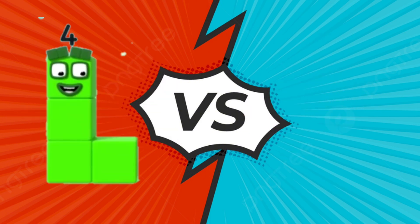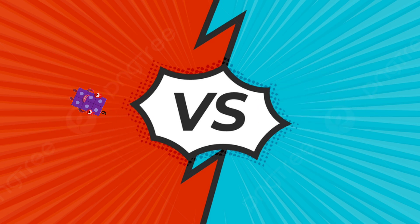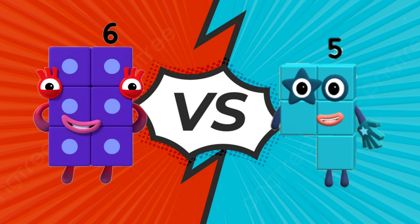Number block 4 likes hot. Number block 3 likes cold. Number block 6 likes hot. Number block 5 likes cold.